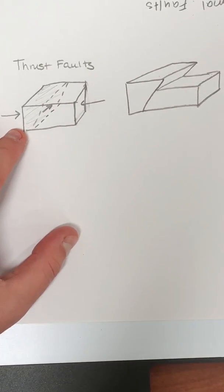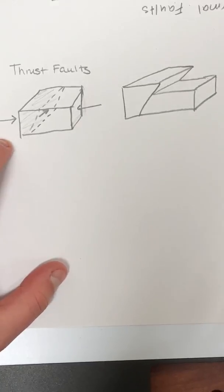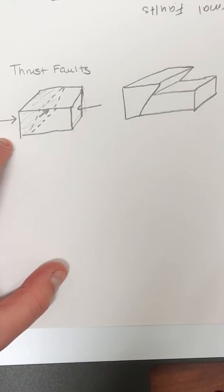Now on Earth we have erosion, so that overhang doesn't really typically last or even get formed—it just kind of collapses.